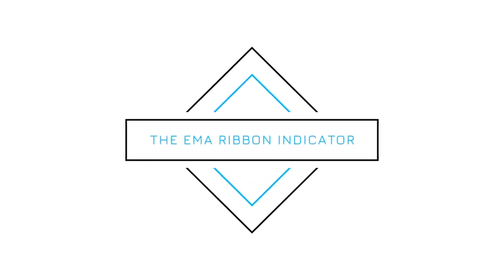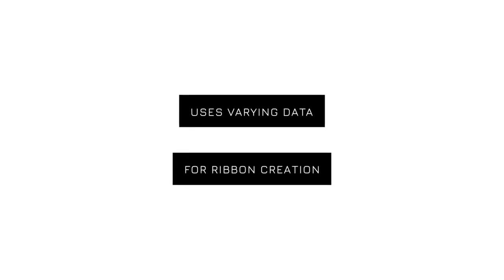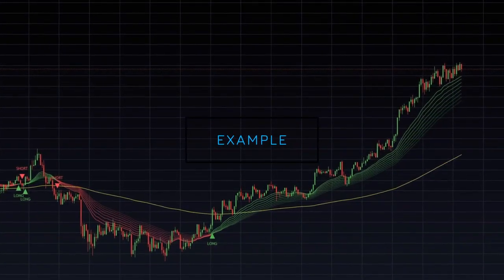Looking at the EMA Ribbon indicator: it works by using a variety of EMAs with various amounts of data for each individual indicator in order to create a ribbon effect. Apart from looking pretty, the indicator can provide buy and sell signals as well as support and resistance. On the screen now, we can see an example of the EMA Ribbon indicator on TradingView.